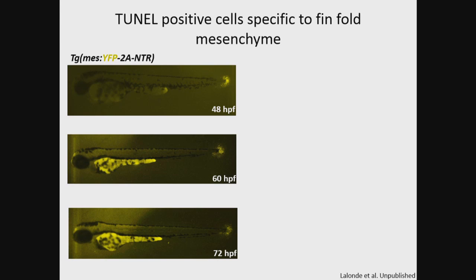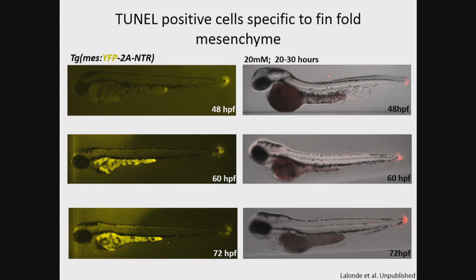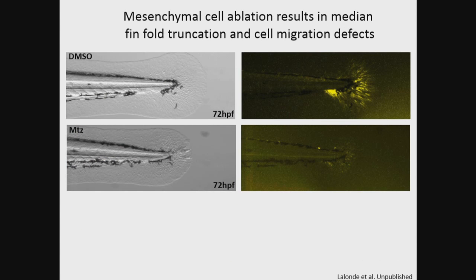Our transgenic nitroreductase line has the NTR enzyme linked to yellow fluorescent protein via the 2A peptide, giving nice reporter expression in the migrating mesenchyme of the median fin. Following metronidazole treatment—the ablation—we used TUNEL assay to show that apoptotic cells are specific to the fin-fold mesenchyme, visible in the median fin at 48, 60, and 72 hours post-fertilization. At 72 hours post-fertilization, we show a drastic reduction in size of the median fin fold, as well as defects in cell migration, compared to DMSO-treated controls. You can also see a loss of YFP-expressing cells as these cells are ablated.